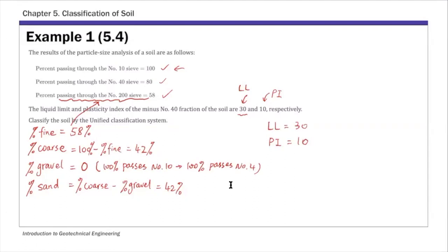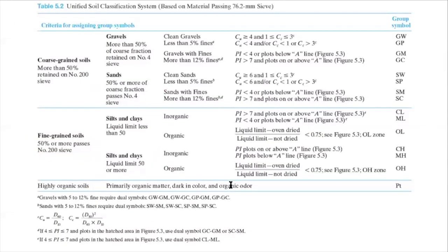And then let's use that table 5.2 to determine a group symbol first. So table 5.2, as I mentioned, we enter from the left hand side. So enter from the left. And the first split here.